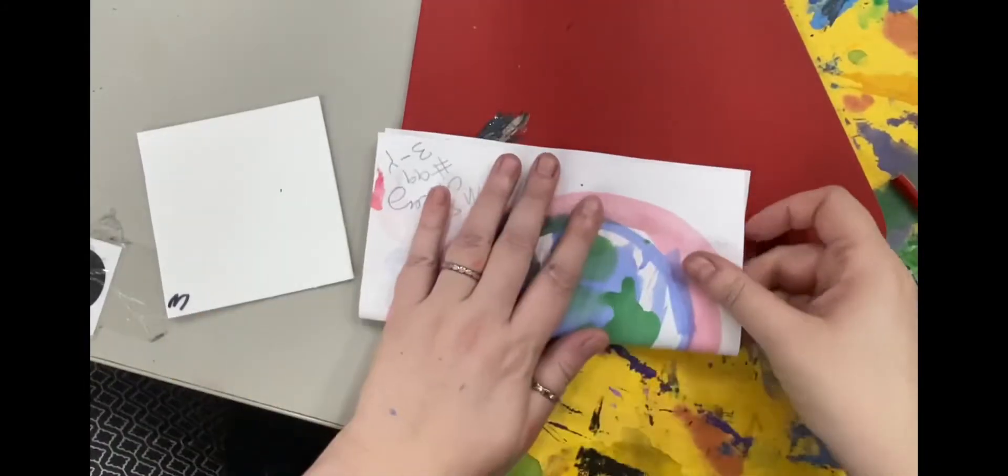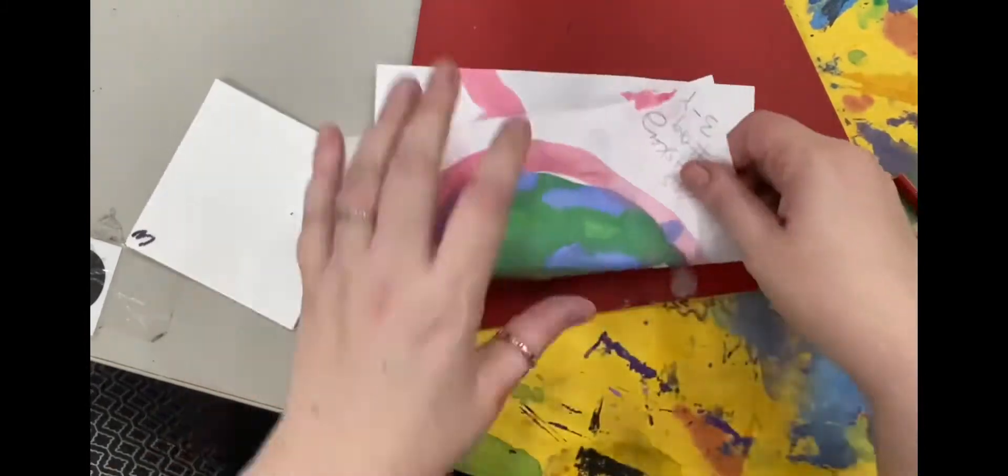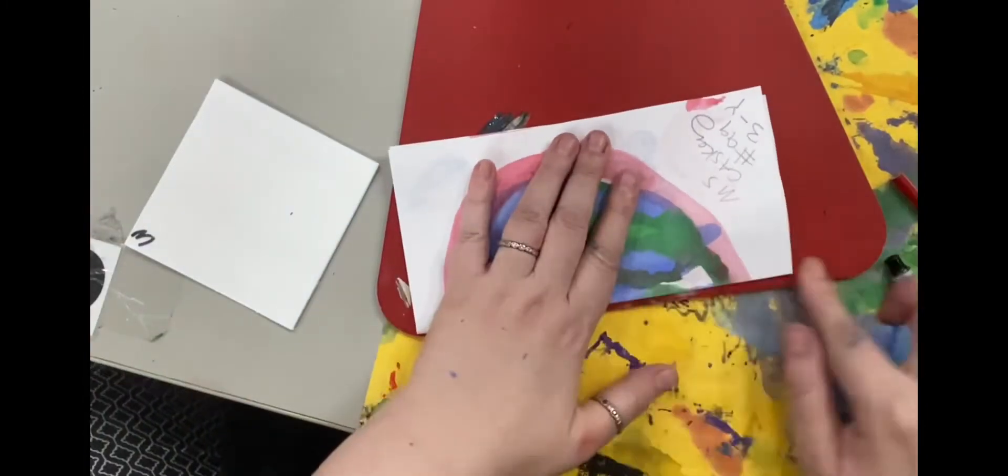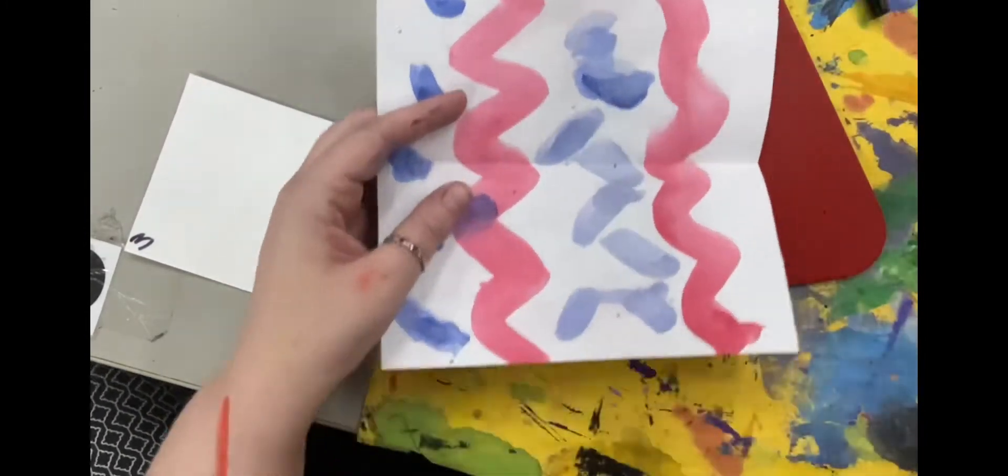Then with your background paper, fold it into quarters, making sure to line up the edges and corners each time you fold it so the lines are even. Now you'll see where the middle of the artwork is going to be.